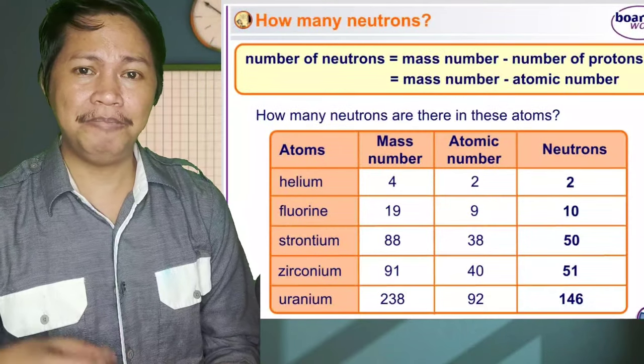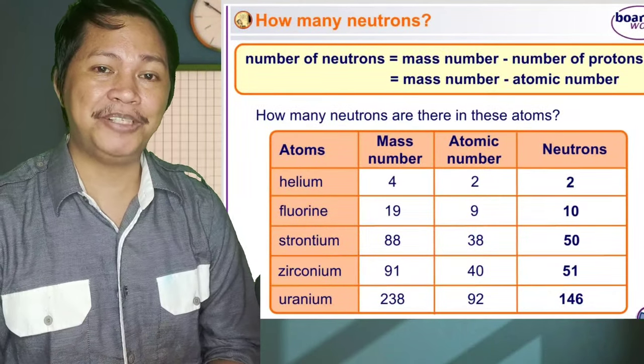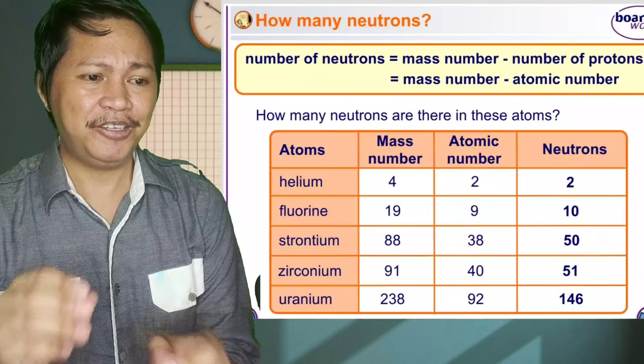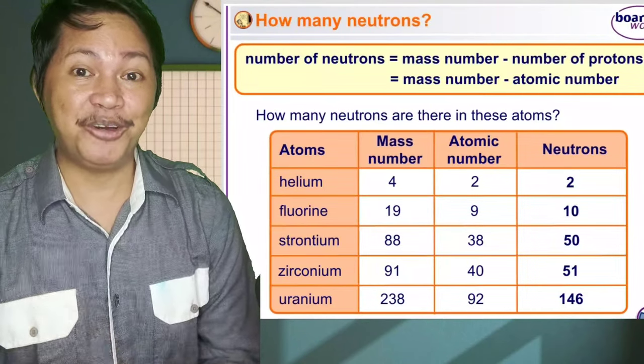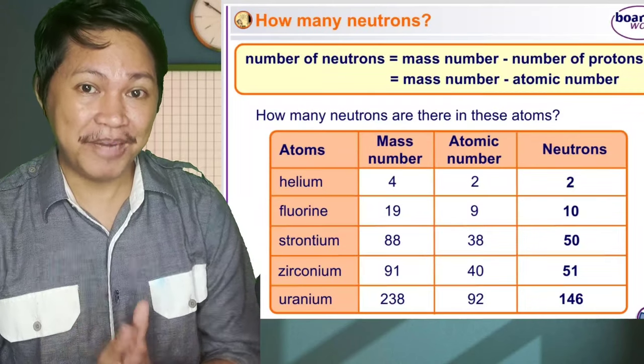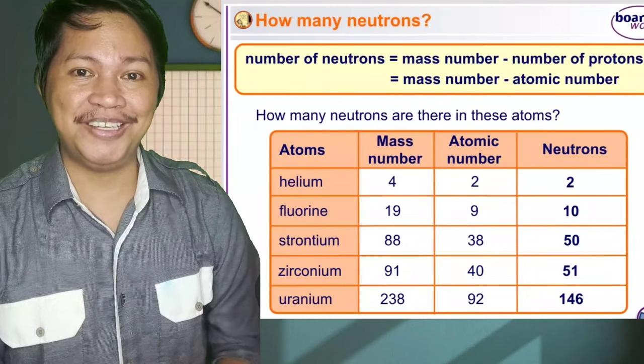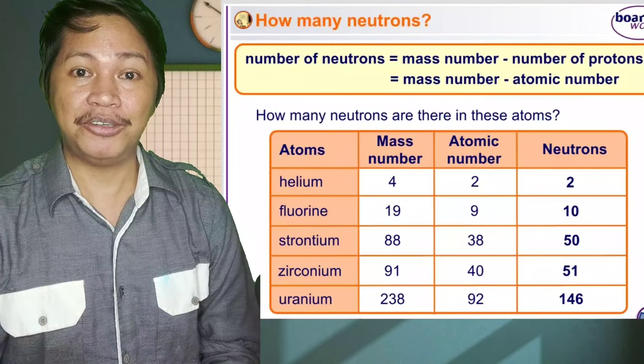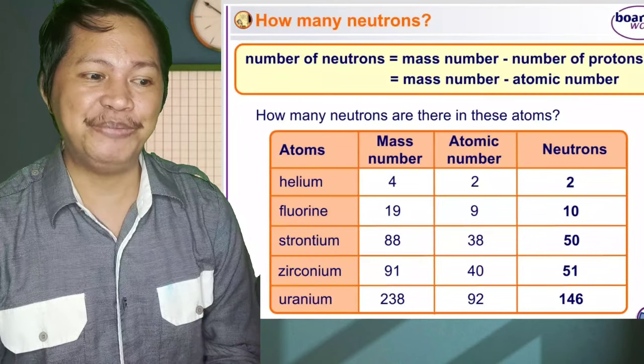For the number of neutrons, you simply subtract the mass number minus number of protons, or it could be mass number minus atomic number. Mass number minus atomic number, then you get the number of neutrons. So in the table, you have helium, fluorine, strontium, zirconium, and uranium.